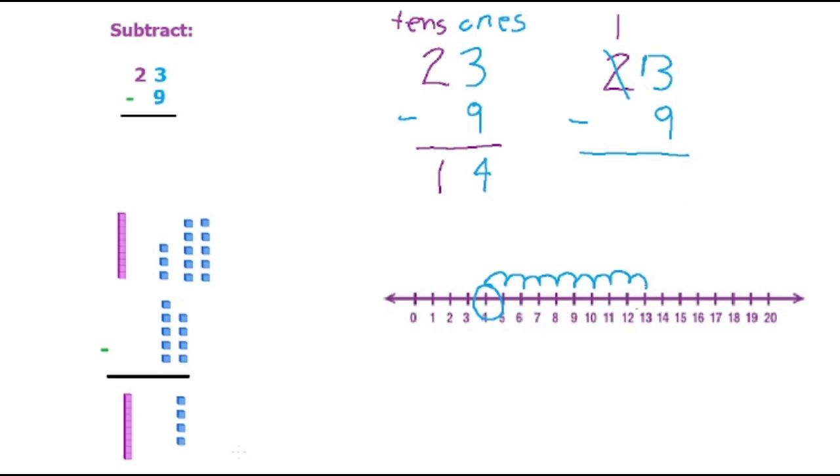And we know from the number line, 13 minus 9 is 4. And then we're left with the 1 in the tens. So 23 minus 9 equals 14. And don't worry if you don't get this right away. Just rewind the video and watch it again.